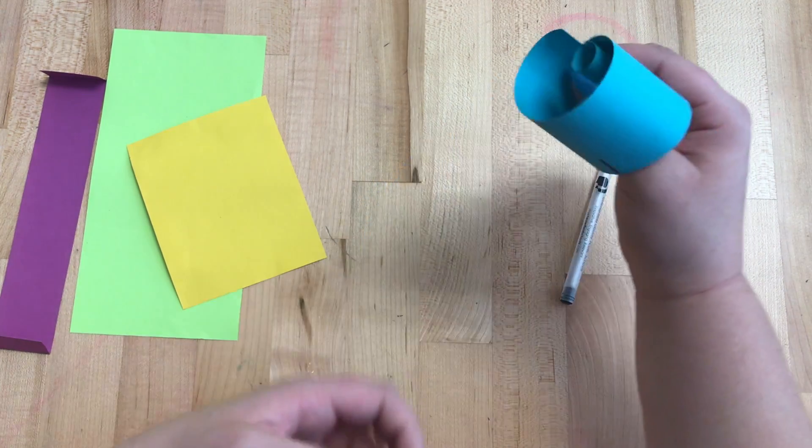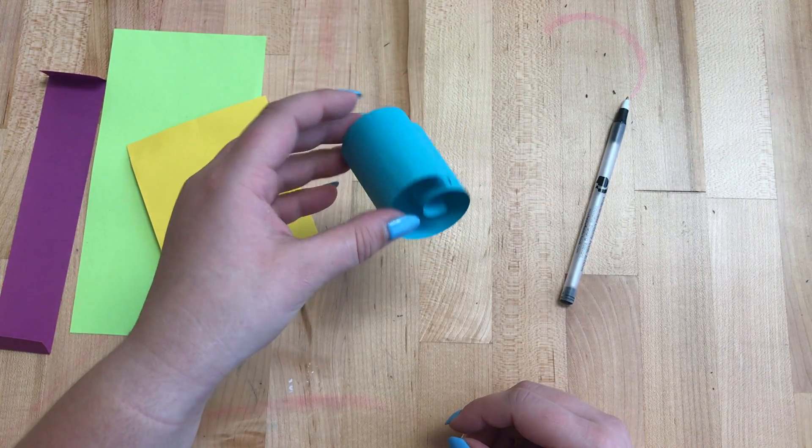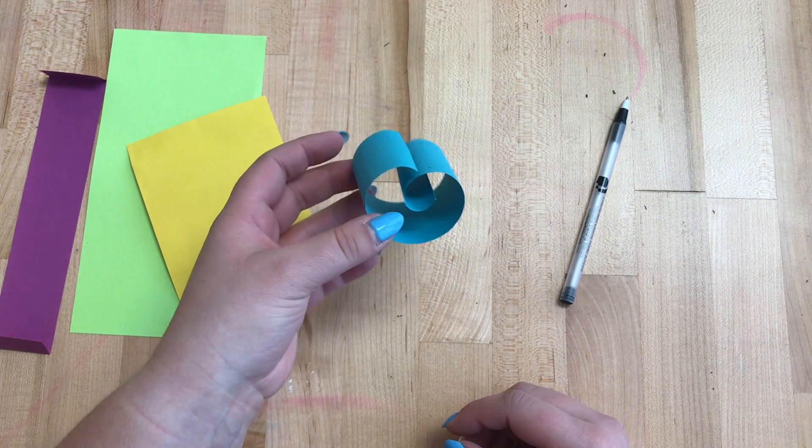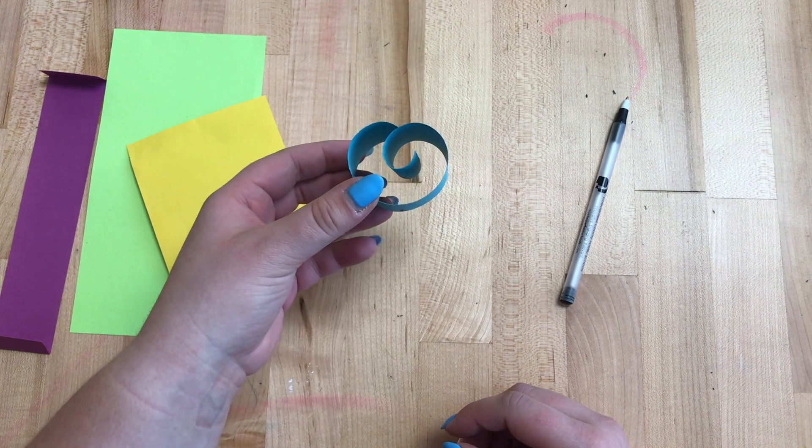What I'll do is pull that a little and look at that. I got a curl. Go ahead and try that at your table.